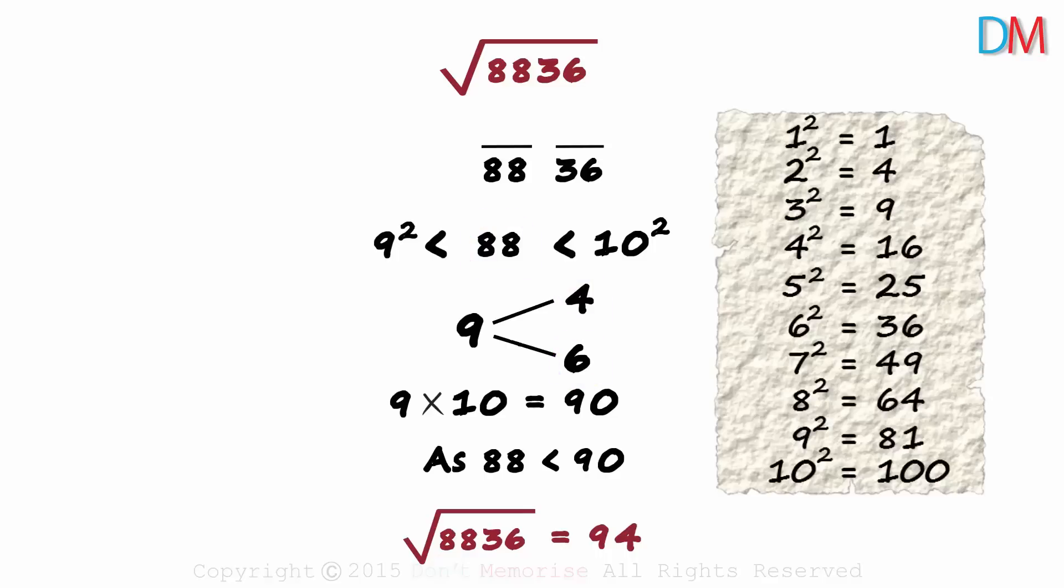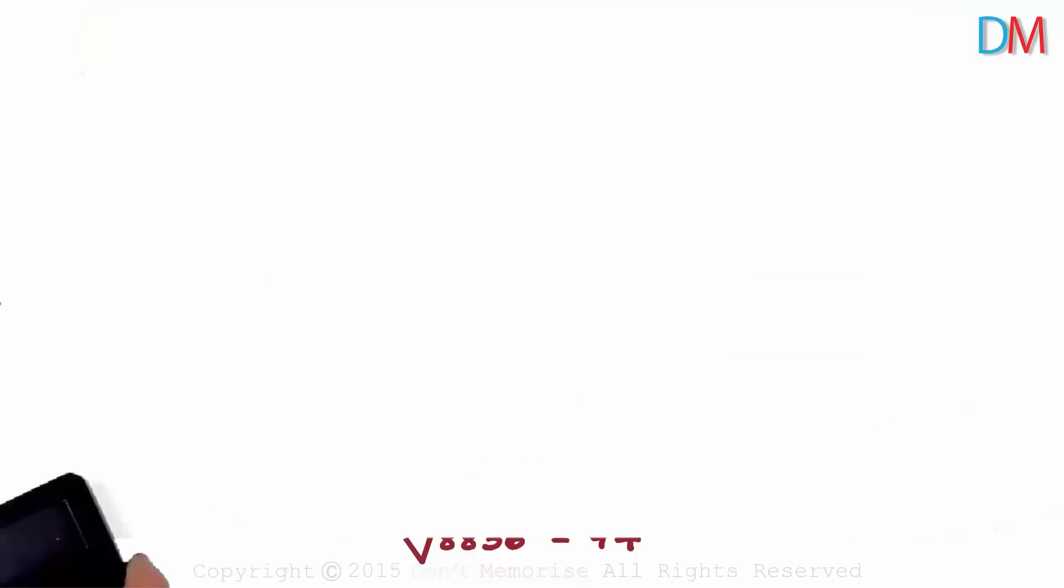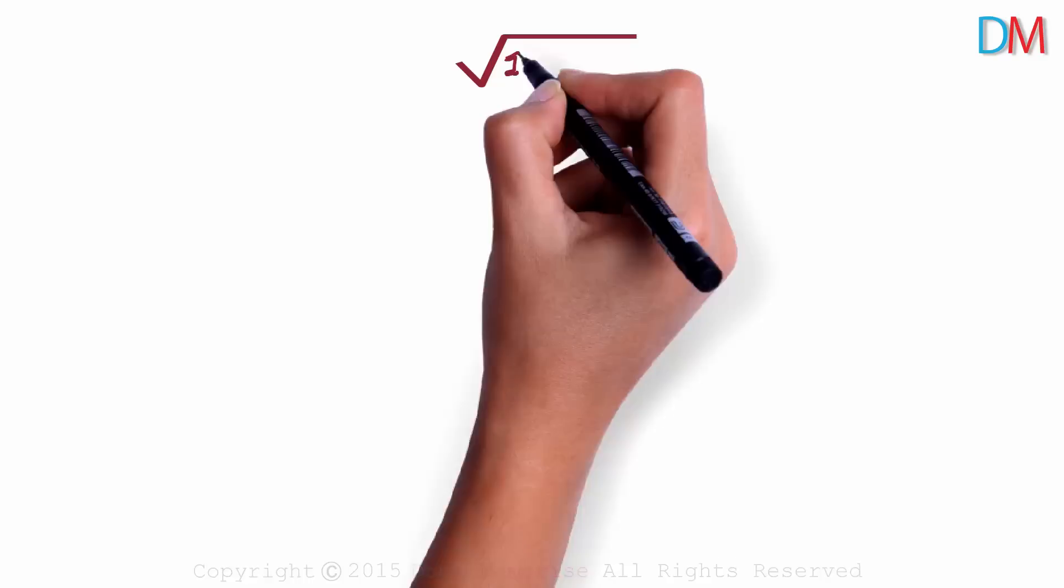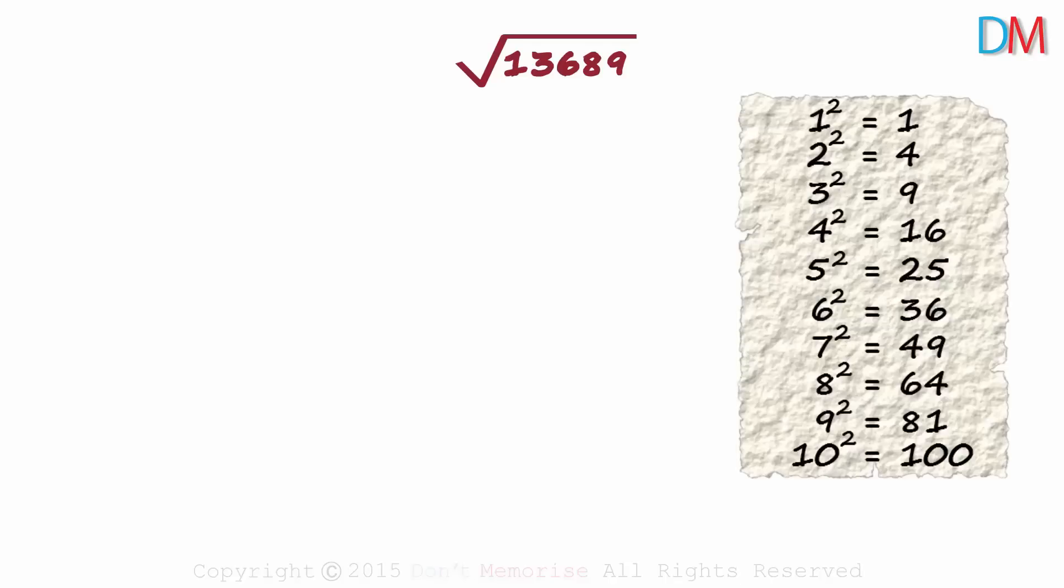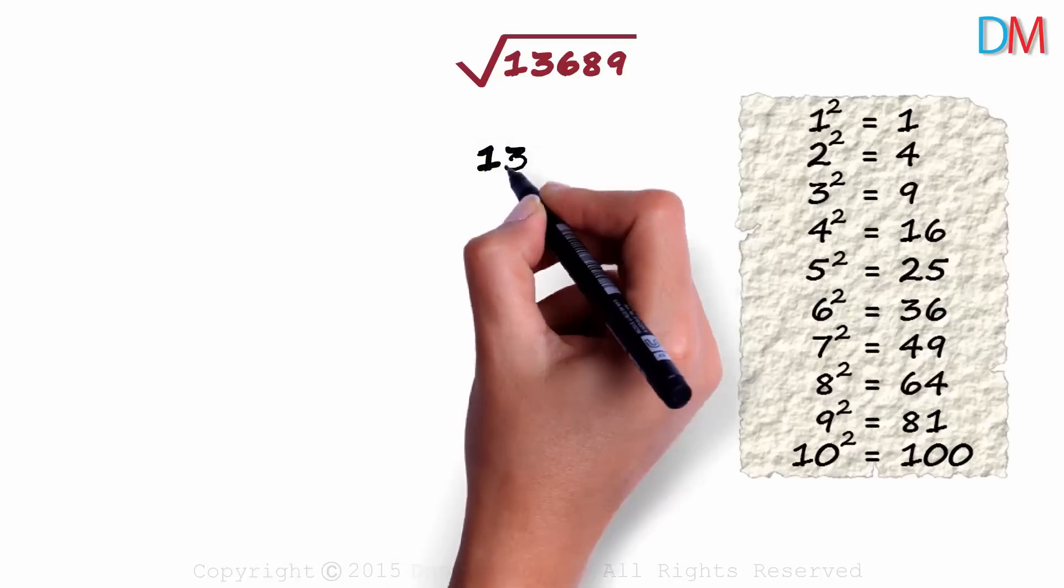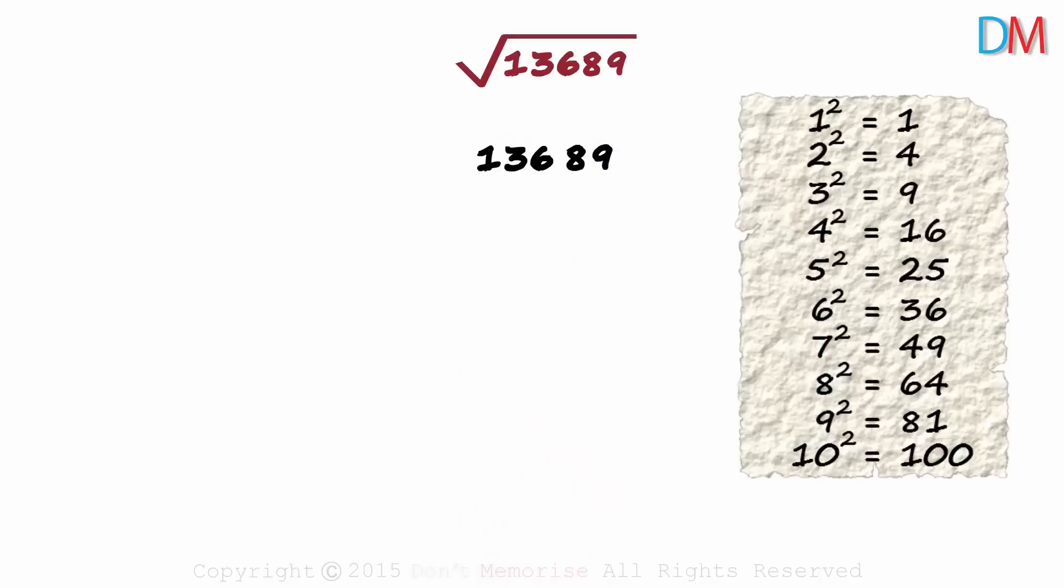This even works with 5 digit numbers if we know the squares of slightly higher numbers. Let's try finding the square root of 13,689. These are the squares of the first 10 numbers. We use the same technique we used for the 4 digit numbers. We write the number 13,689 down and mark 2 digits from the right. And then we draw a bar over the remaining digits. We look at this number.